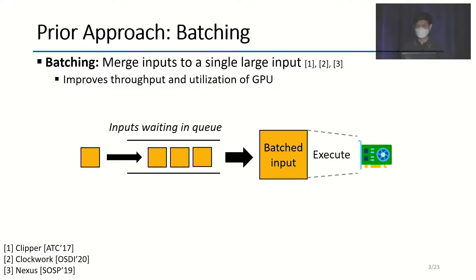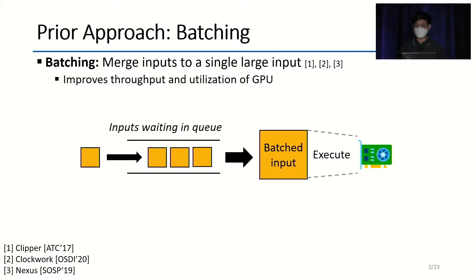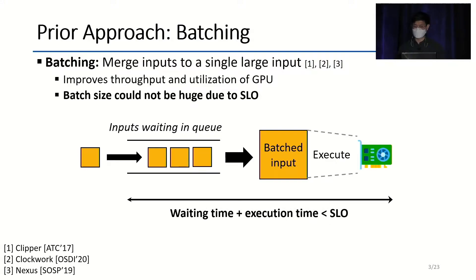There have been a few approaches for scheduling machine learning inference tasks on GPU. The first approach is batching, which means merging inputs into a single large input. It is primarily used in systems where you can afford to wait and form a batch with inputs waiting in a queue. Batching is used because larger inputs improve throughput and better utilize GPU computation resources. To guarantee the SLO, the time waiting to form a batch added to executing the batch must be within the SLO, which implies batch size cannot be infinitely large.